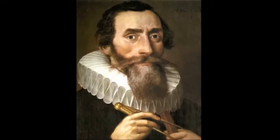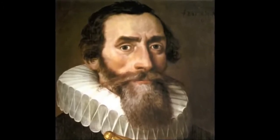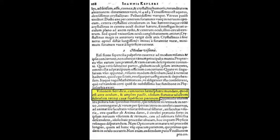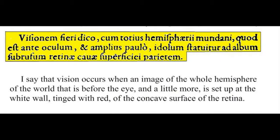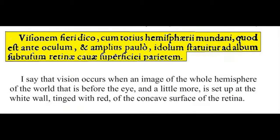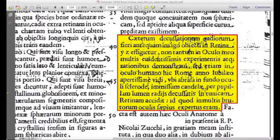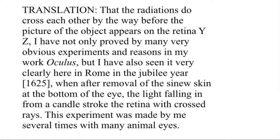The German astronomer Johannes Kepler published a book on optics in 1604 in which he stated that our eyes function by focusing an image onto the back of the eye. The physicist and astronomer Christoph Scheiner proved Kepler was right by removing most of the tissue from the back of an actual eye and looking at the focused images.